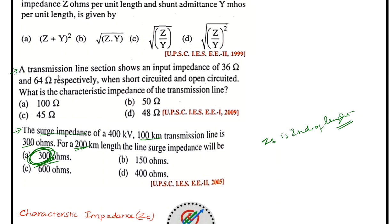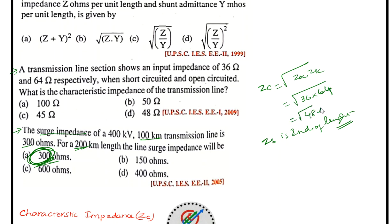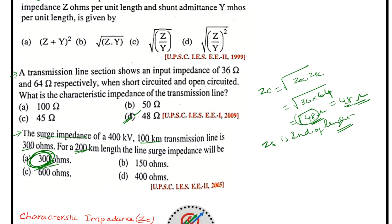Question 2: A transmission line section shows input impedances of 36 ohms and 64 ohms under short circuit and open circuit conditions respectively. What is the characteristic impedance? Using Zc = √(Zoc × Zsc) = √(36 × 64) = √2304 = 48 ohms. Answer: 48 ohms — option D.